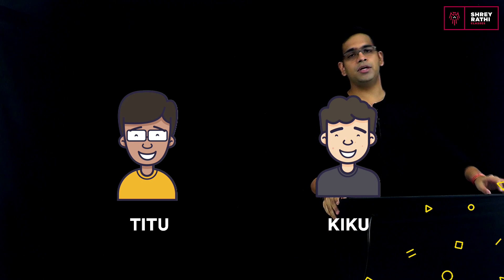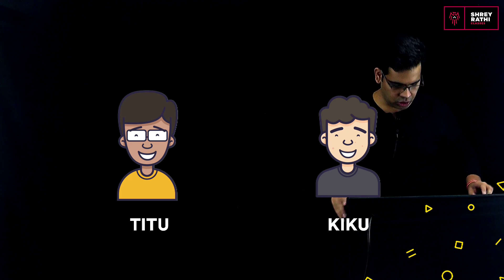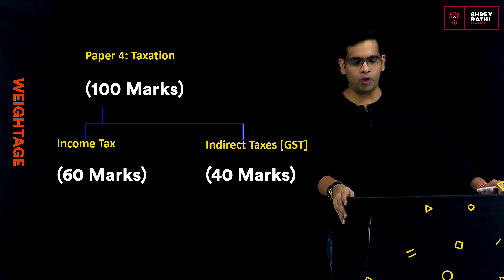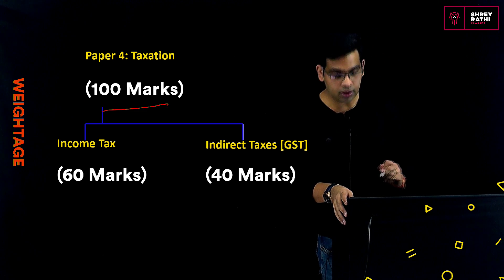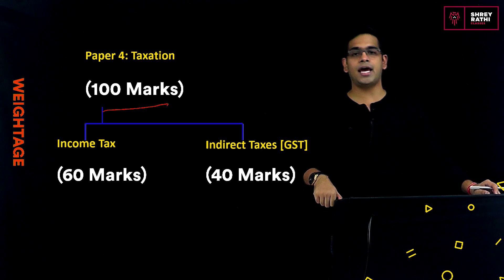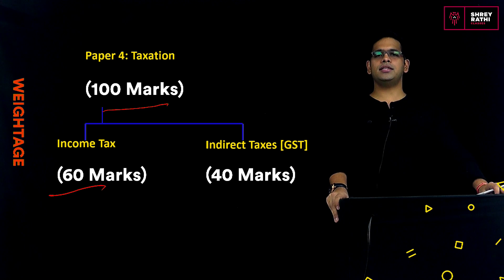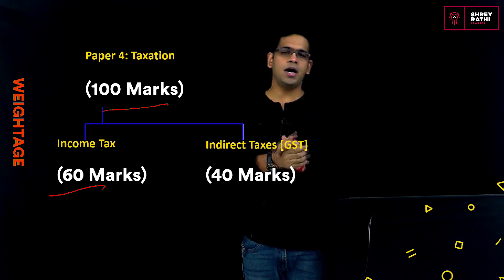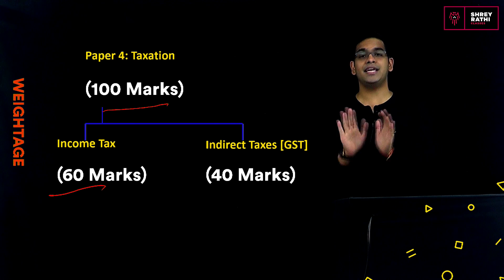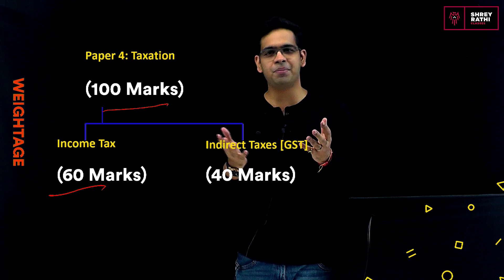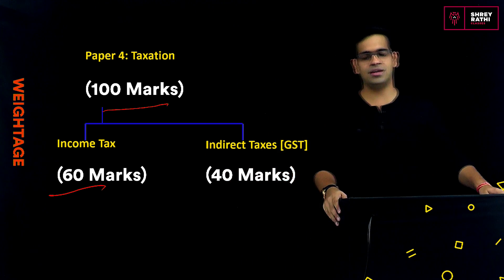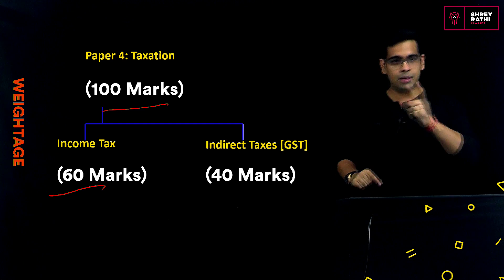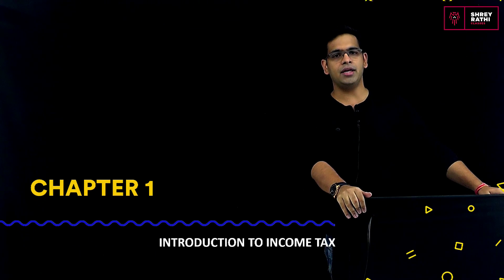We will be covering hundred percent topics as put up in the ICAI module. Taxation falls in Group 1 for CA Intermediate, Paper 4 — a 100-mark paper segregated into two parts: Income Tax for 60 marks and Indirect Taxes (GST) for 40 marks. You will also be happy to know that 30 percent of your hundred marks are MCQs without negative marking as of now. That is icing on the cake — 30 free marks, of course, if you know the correct answers.